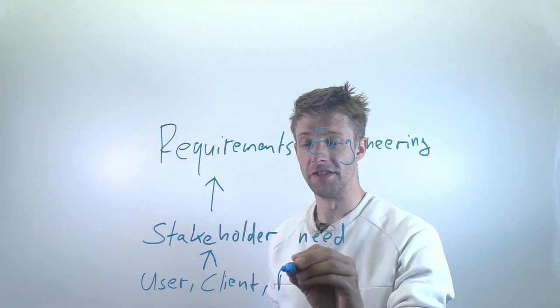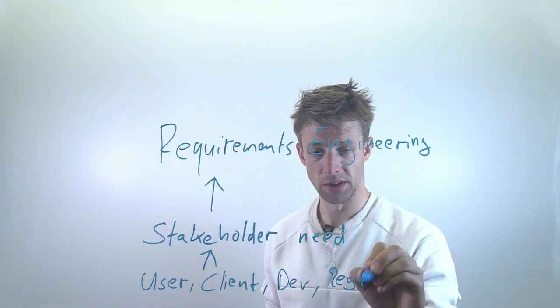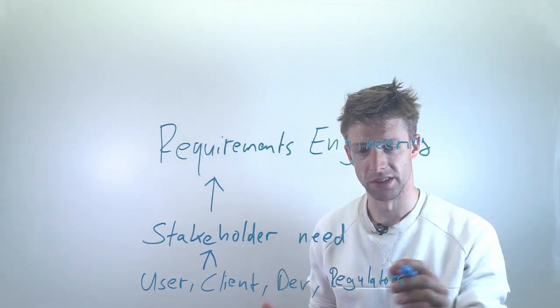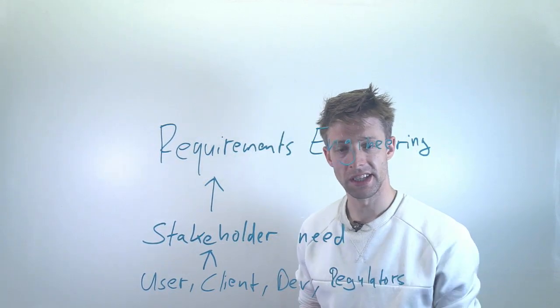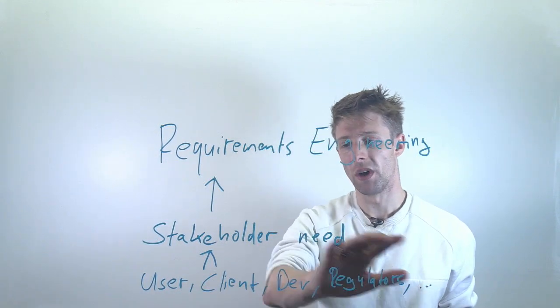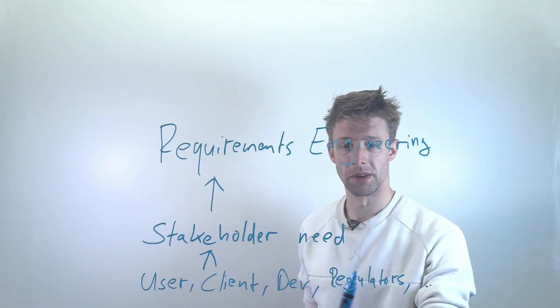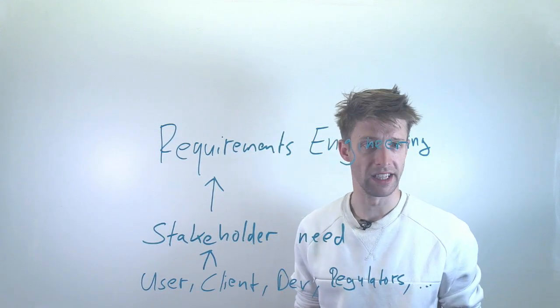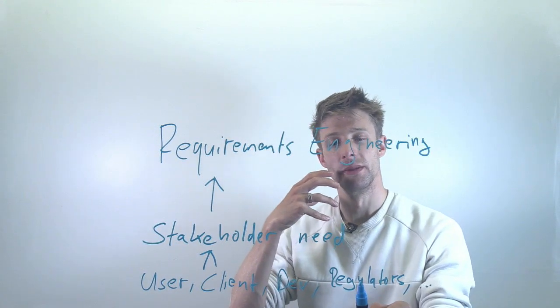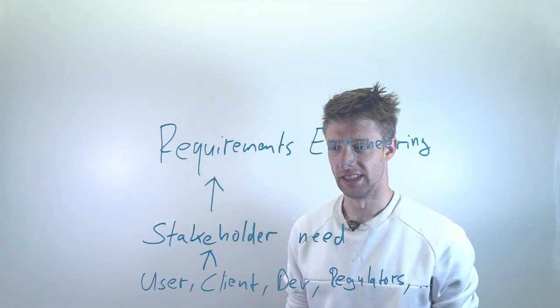It could be regulatory bodies, regulators. So let's say you are developing finance software, then of course there are certain requirements on how to do that. The software is regulated, then the regulators are stakeholders. This list can go on, so it's pretty difficult to figure out what is it that these stakeholders need, all of them. In particular, if you think for example about the developer and the regulators, these might very well be conflicting. It might be very easy to develop the system a certain way but you might have to do it differently because regulations ask you to.